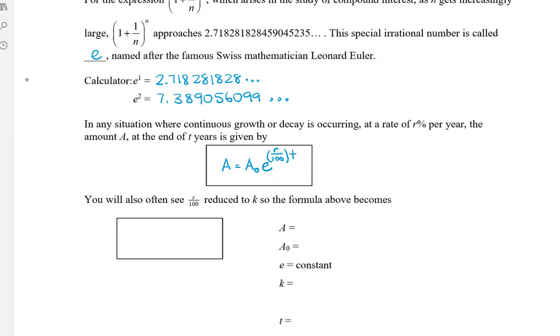So instead of using the formula that we used to use, which was a equals a naught times x to the power of n, we've now changed it to be a base of e, where e is that number 2.718. Now don't use the number 2.718, actually use the number that's built into your calculator.